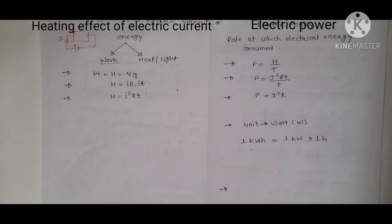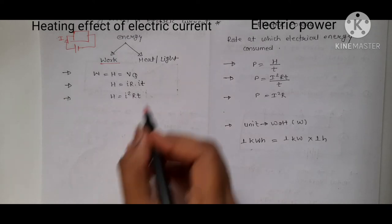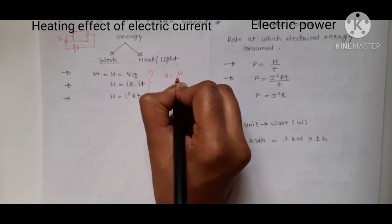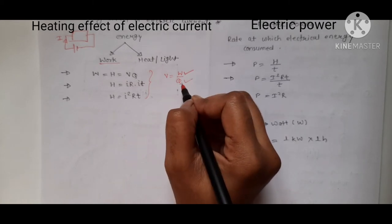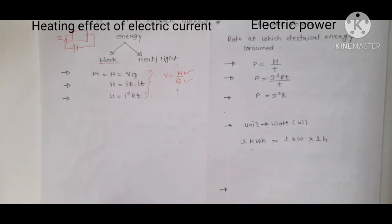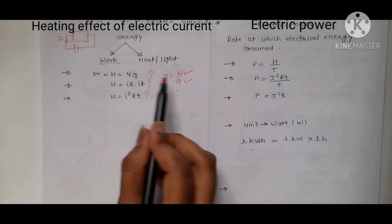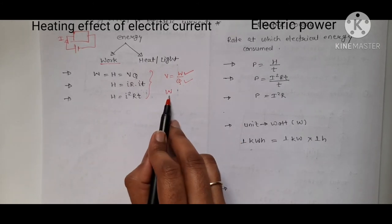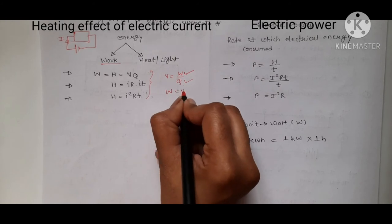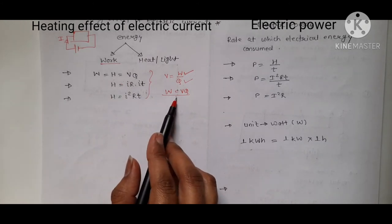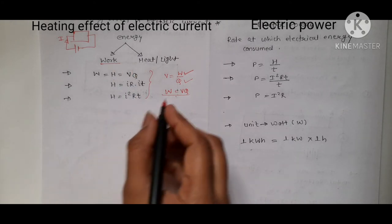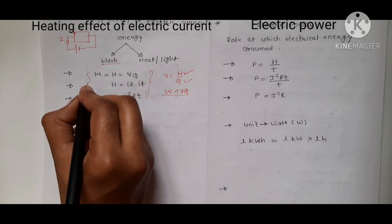Now let's derive the formula for heating effect. We know the electric potential formula: V = W/Q, where W is work done and Q is electric charge. The work done per unit charge gives the potential difference. Rearranging: W = V × Q. This work done is the electrical energy, so H = V × Q.